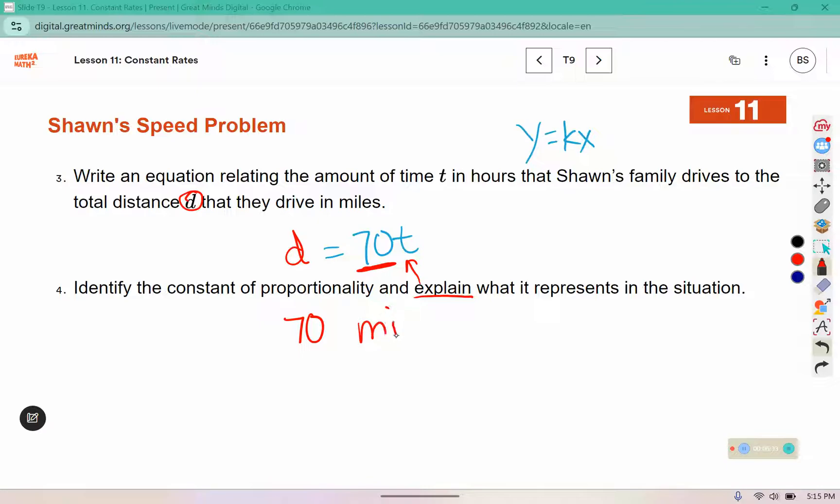And explain what it means. This is how many miles they travel. Per hour means in one hour, so they travel 70 miles in one hour.